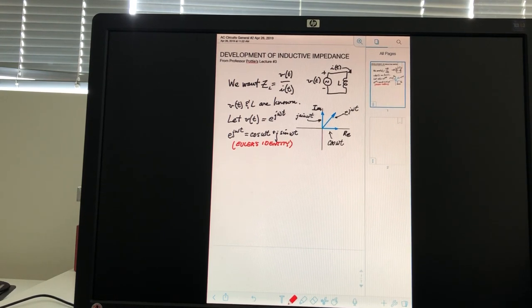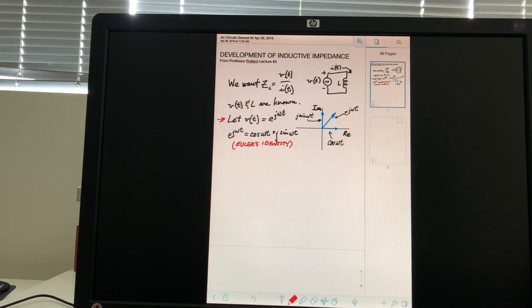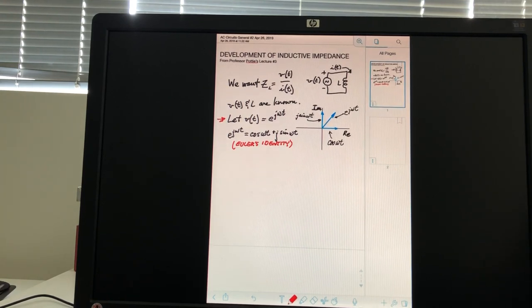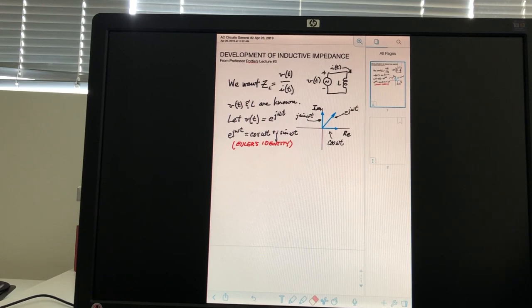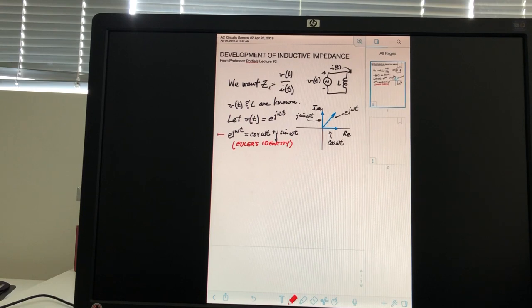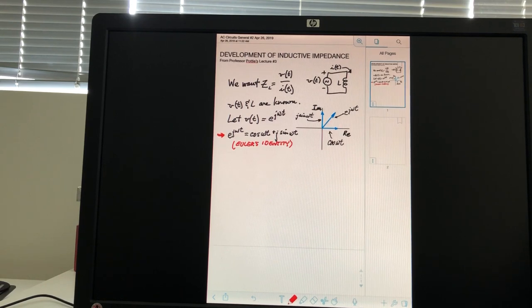And we want to let V of T equal e to the j omega t. Well, what does that mean, e to the j omega t? Well, if you remember Euler's identity, then you know that e to the j omega t can be represented by cosine omega t plus j sine omega t. And now that allows us to plot this as a complex number on the complex plane.